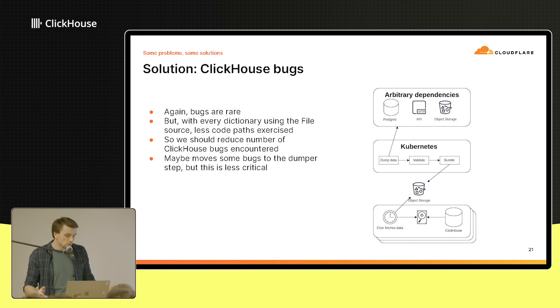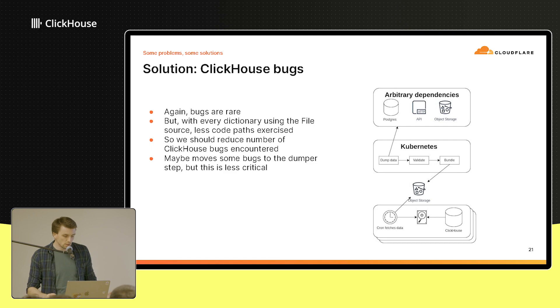Bugs are rare, but the way we address this is that by using the file source, we're exercising a much smaller number of code paths. We're never going to run into issues with ODBC Bridge or executable files, because everything is just a file source loading static files off disk. You could argue some bugs might just get moved elsewhere in the pipeline, but we're mostly concerned about keeping ClickHouse online.